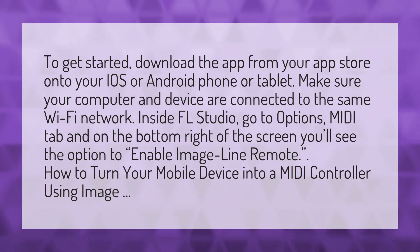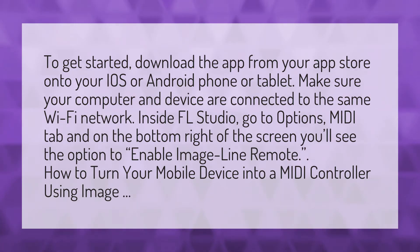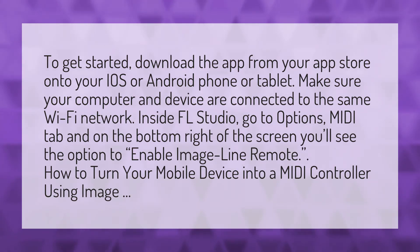To get started, download the app from your app store onto your iOS or Android phone or tablet. Make sure your computer and device are connected to the same Wi-Fi network. Inside FL Studio, go to Options, MIDI tab, and on the bottom right of the screen you'll see the option to Enable Image Line Remote.